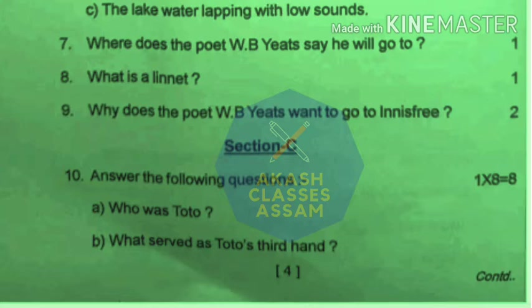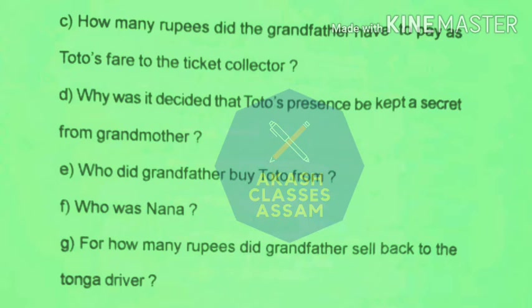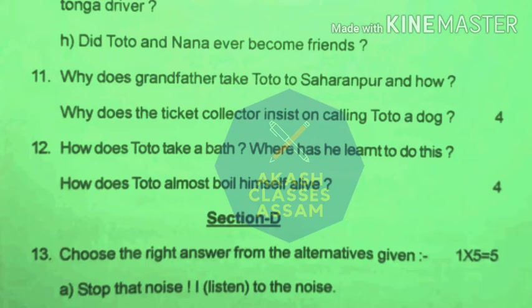In section C, some questions are given and you have to write the answers. In question number 11, it is asked why does grandfather take Toto to Saharanpur and how. Also, why does the ticket collector insist on calling Toto a dog.